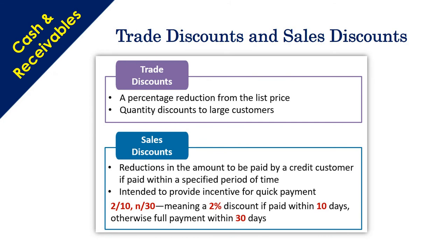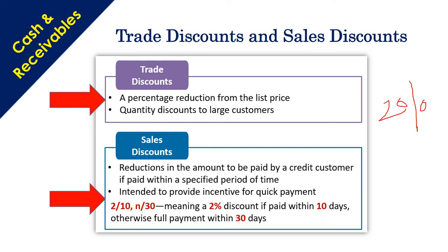Trade discounts are a percentage reduction from the list price, and quantity discounts to large customers — these do not actually affect your cash payments. Sales discounts are a reduction in the amount to be paid by a credit customer if paid within a specified period of time, intended to provide incentive for quick payment. The normal term is 2/10/30, meaning if you pay within 10 days you receive a 2% cash discount, but the remaining amount must be paid within 30 days.